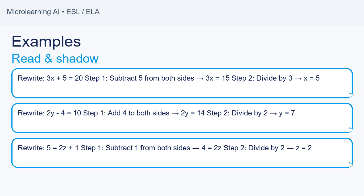Rewrite: 2y minus 4 equals 10. Step 1: Add 4 to both sides. 2y equals 14. Step 2: Divide by 2. y equals 7.